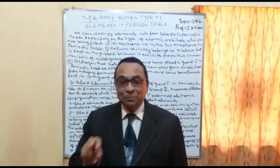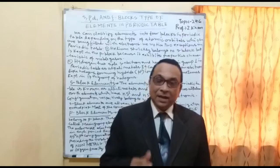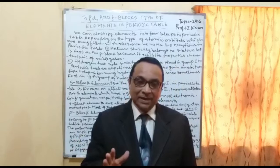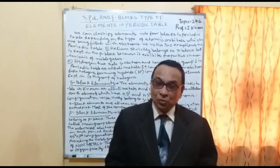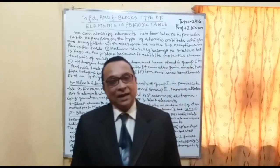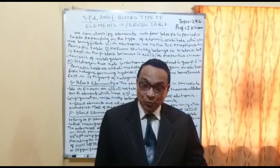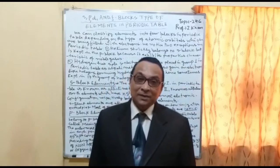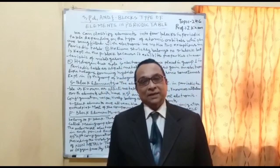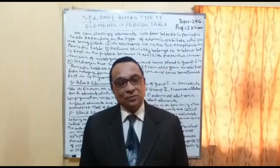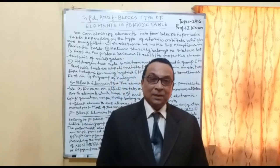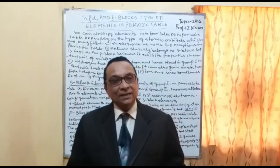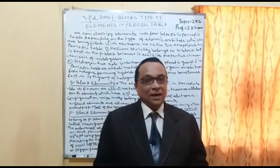It depends upon the number of electrons in the outer shell, and on that basis S, P, D, F are classified in the periodic table. Group 1 and group 2 elements are ionic and metallic. Group 1 is known as the alkaline group elements and group 2 is known as alkaline earth group elements. They give a positive charge and have a high tendency of losing electrons and forming positive ions.